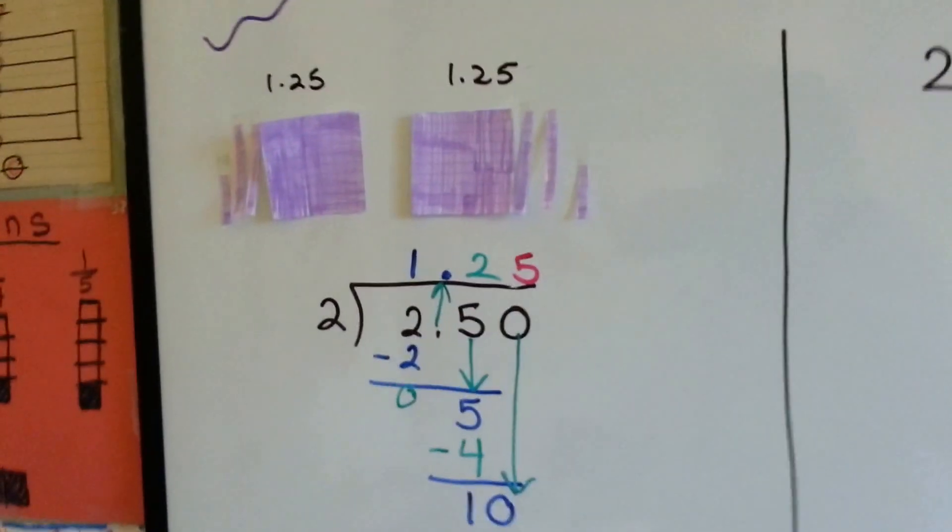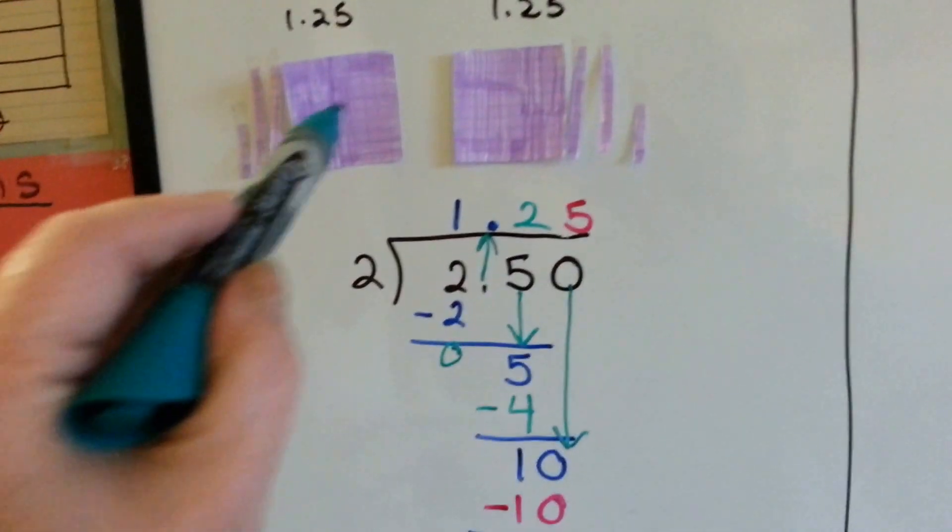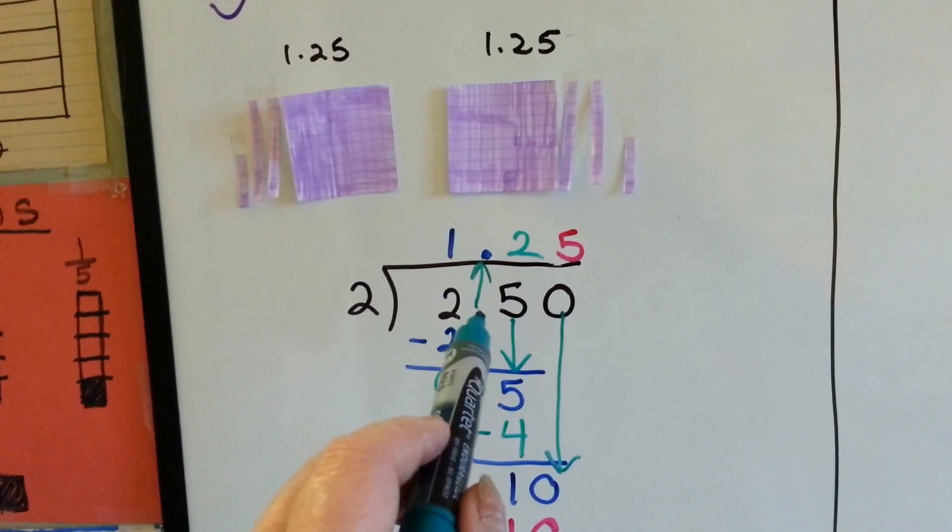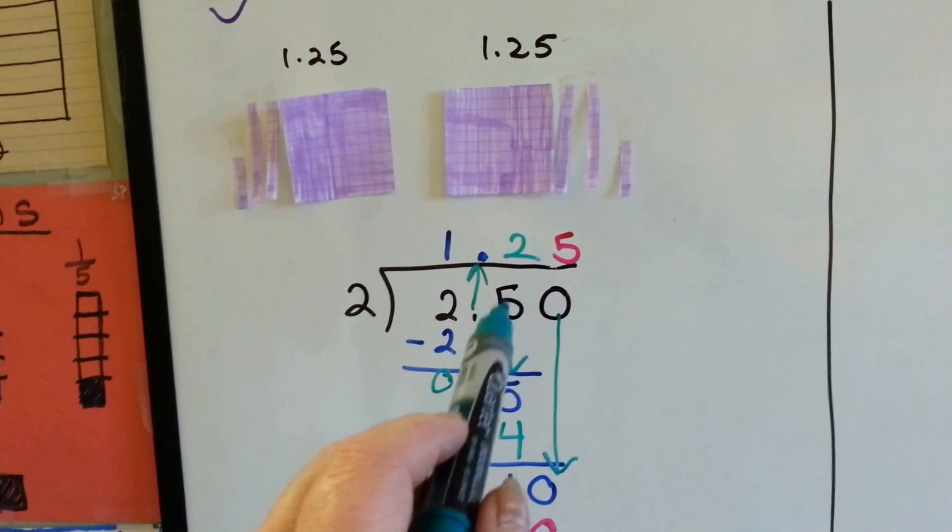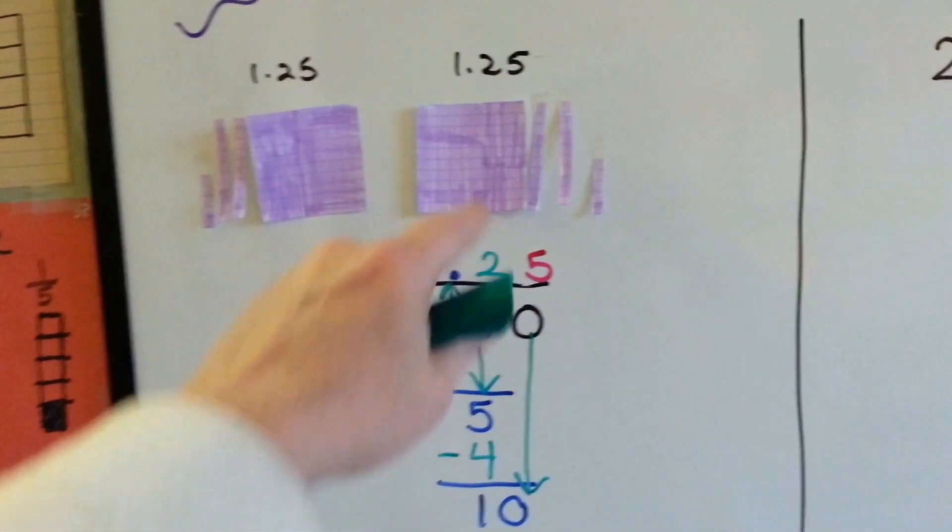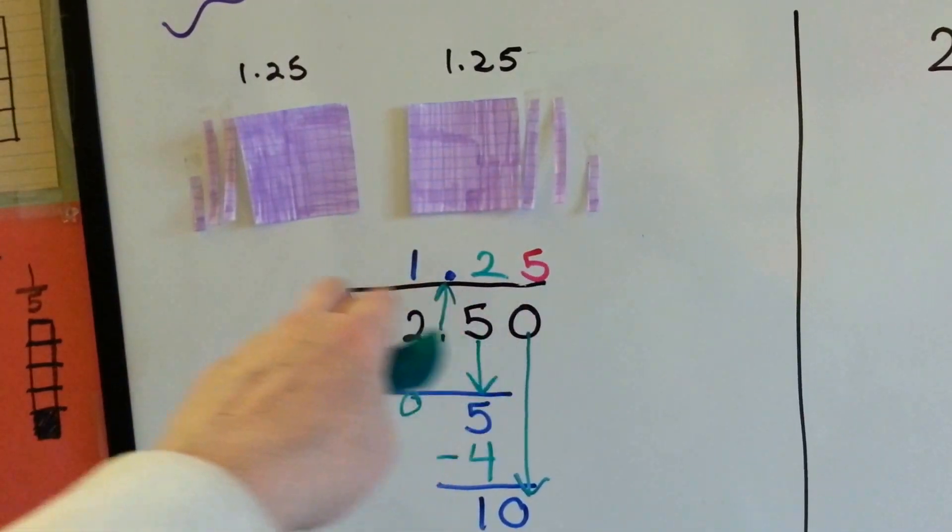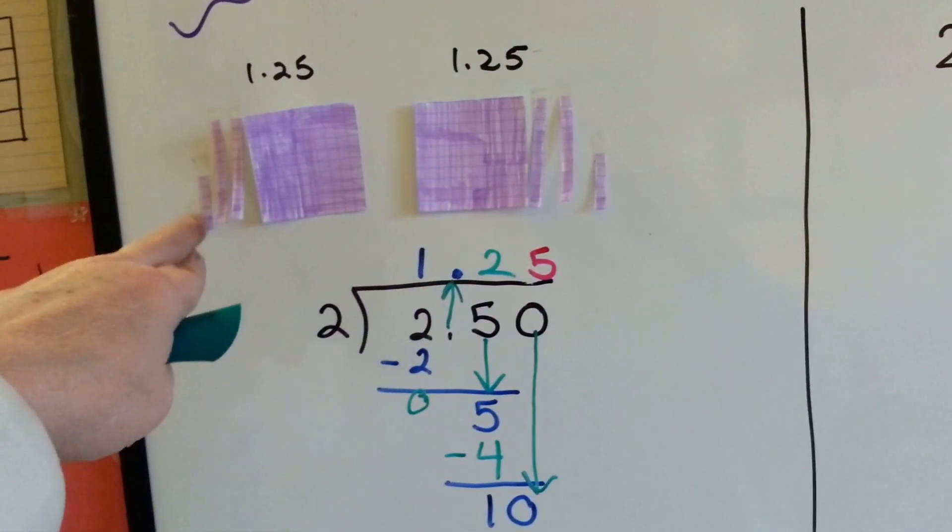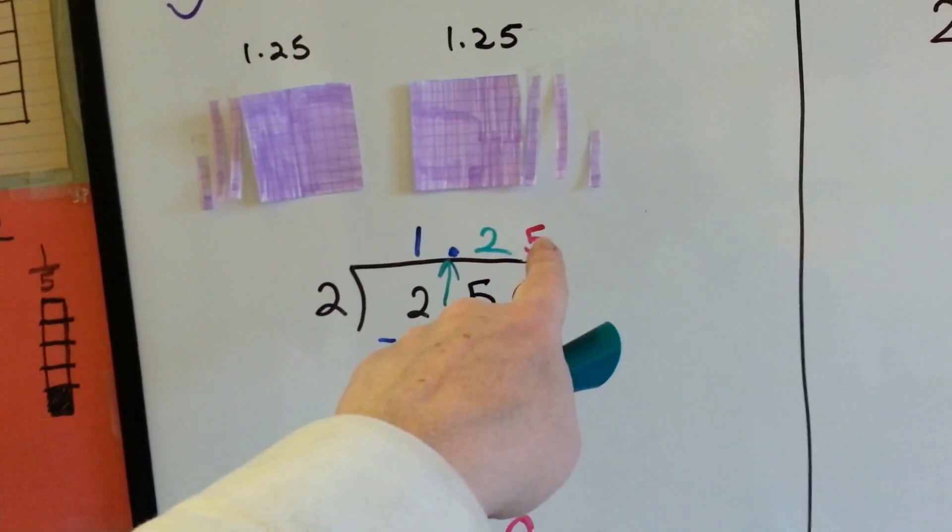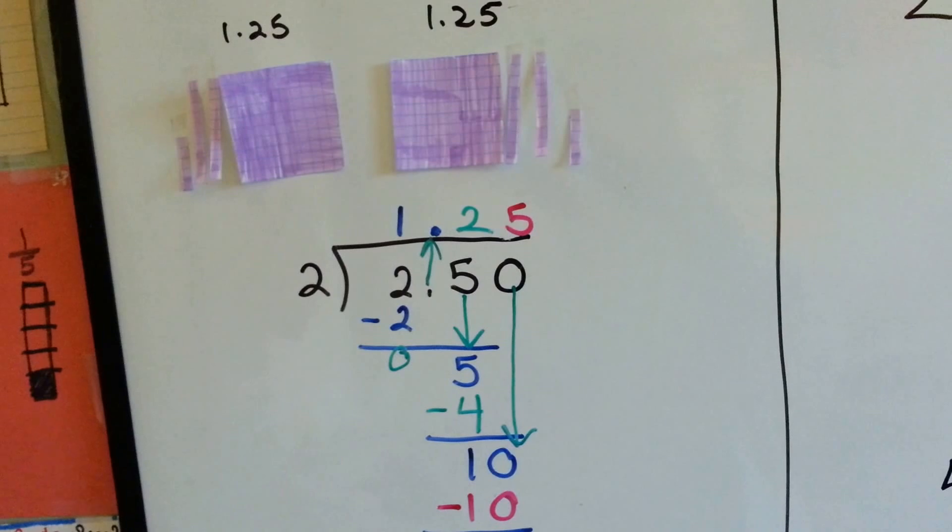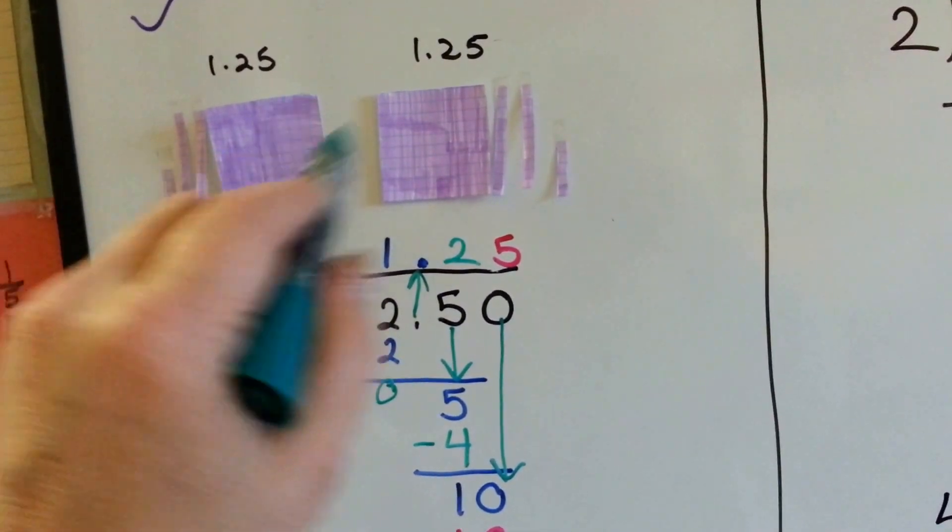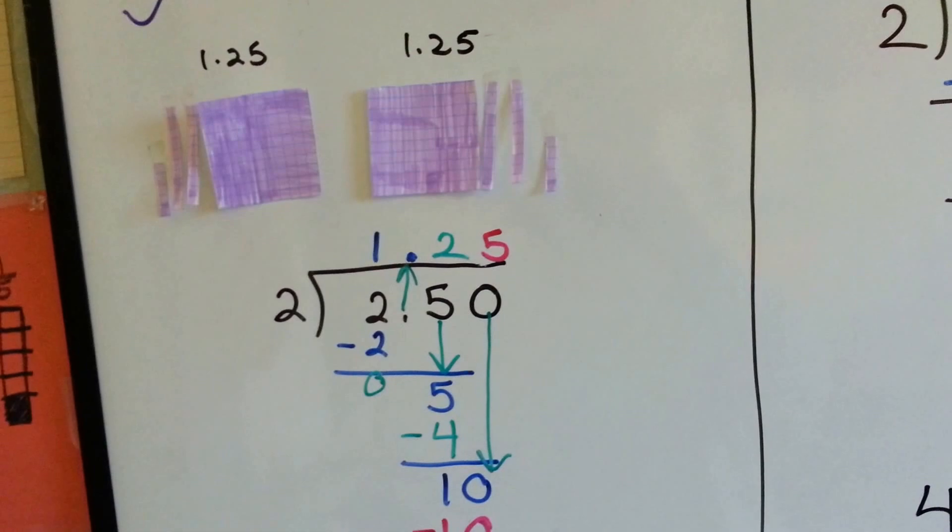When we use models, all we have to do is make as many models as the dividend is. We have 2 and 50 hundredths, or 2 and 5 tenths, so what I did was I made 2 whole ones, I made 5 bars of 10, and then I cut one of them in half when I got near the end because I had to do a 5. But I ended up with 1 and 2 tens and a 5 for each side, which is 1 and 25 hundredths.